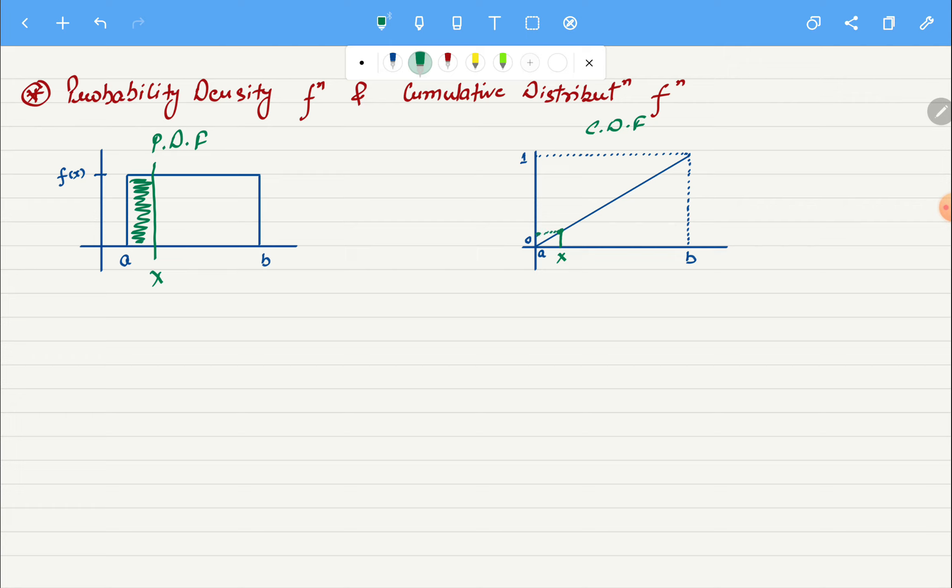So just like that, if I keep moving my this x pointer in this particular direction, in the beginning I had x here, then we had it here, then we had it here. It was giving me probability of points being less than that. So when I am moving parallel to x-axis on my PDF, I move along our CDF line here like this.